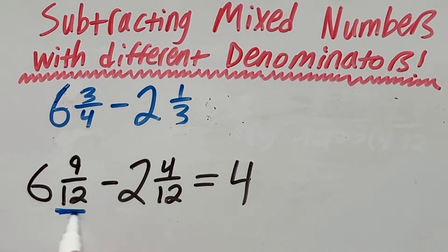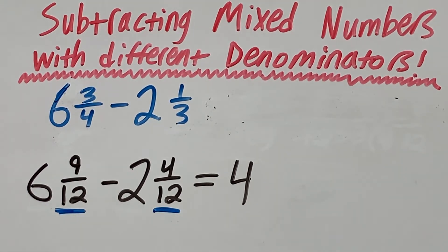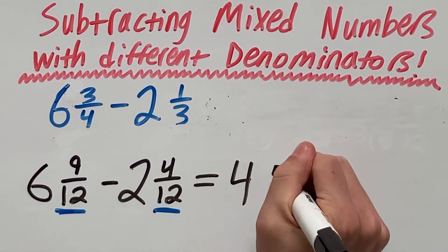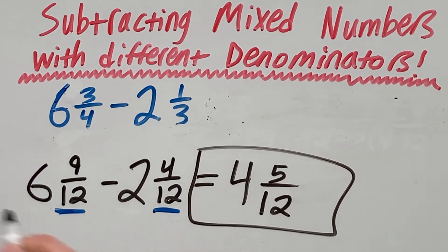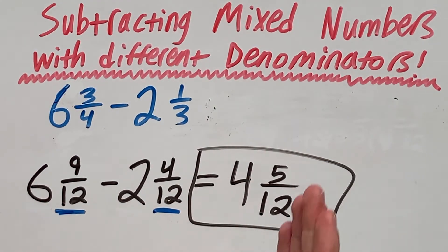And now we want to subtract 9 over 12 by 4 over 12. 9 minus 4 is 5, and our denominator will stay as 12. So the answer to our problem is 4 and 5 twelfths.